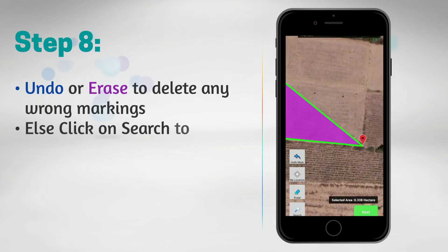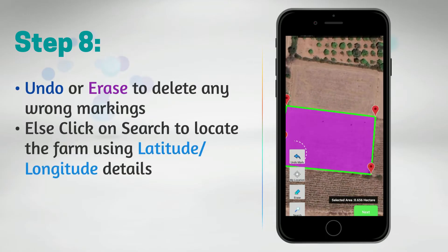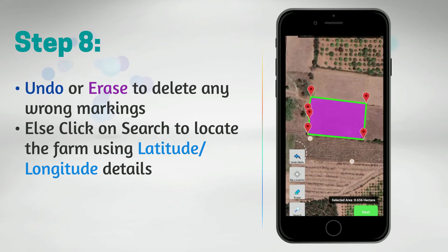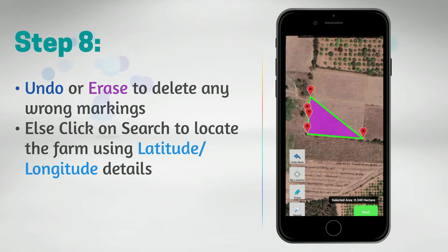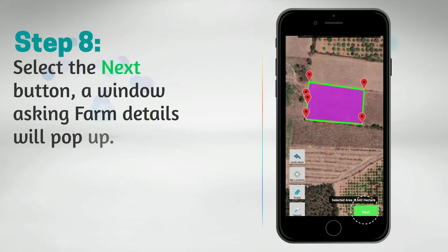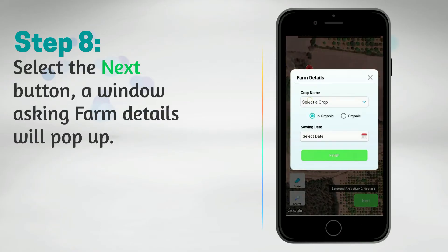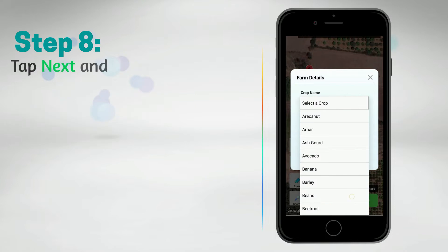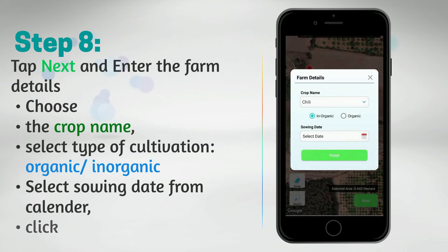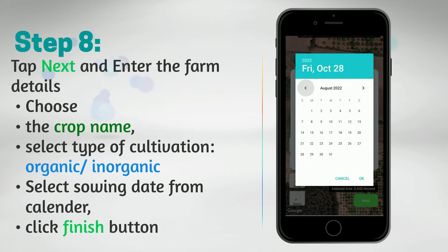You can delete the marking by selecting the undo mark or erase option. You can also locate your farm using latitude and longitude details within the search option. Select the next button and a window asking for farm details will pop up. Choose the crop name from the drop-down menu, opt for either organic or non-organic type of cultivation, select the sowing date from the given calendar, and tap the finish button.